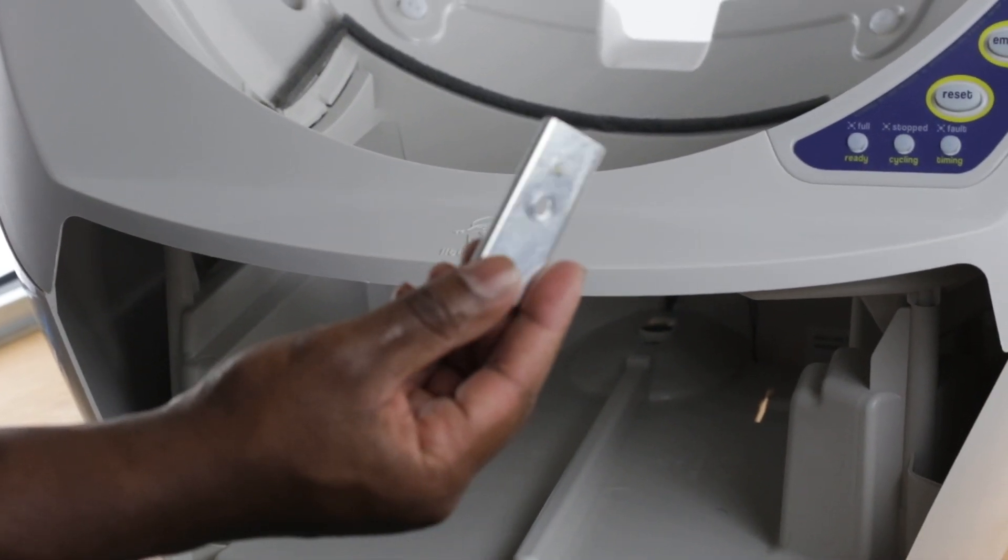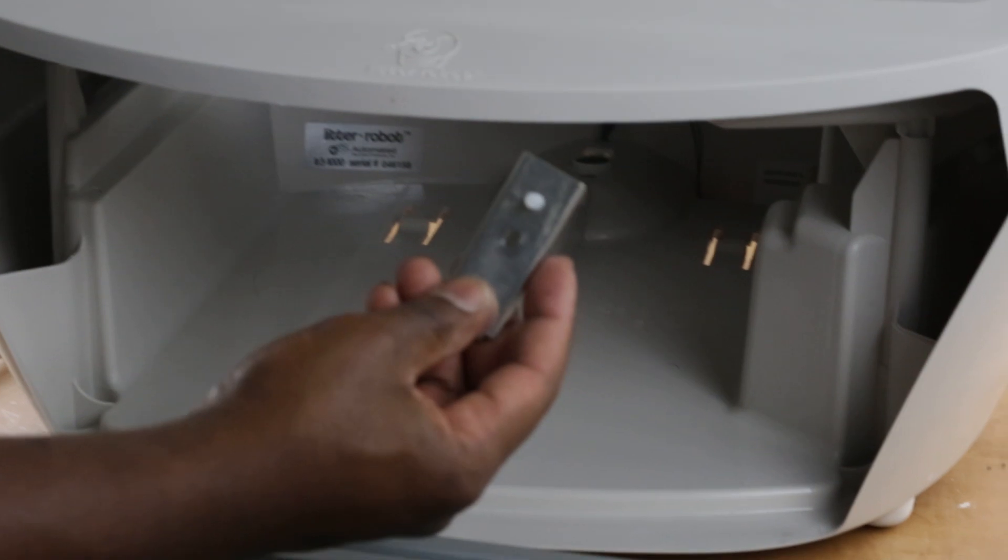Put the sensor cover back on top of the sensor, double check the orientation. Apply pressure on the base and make sure the bolt comes out through the hole.